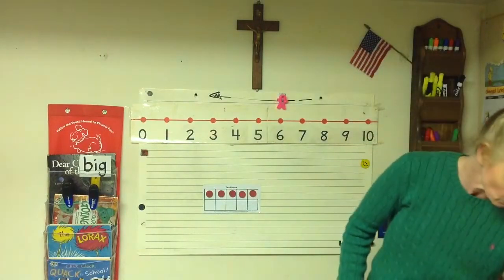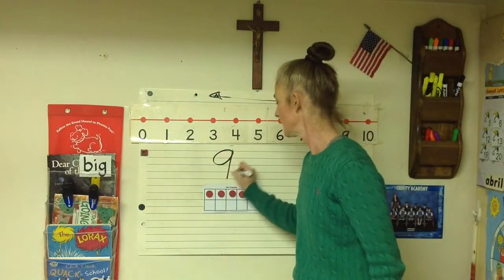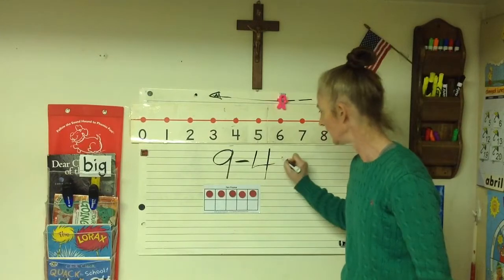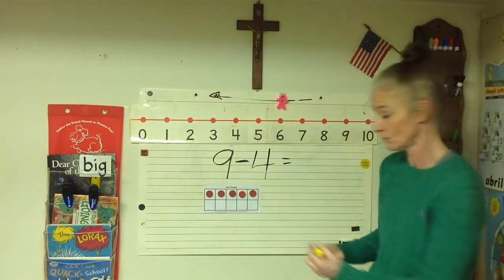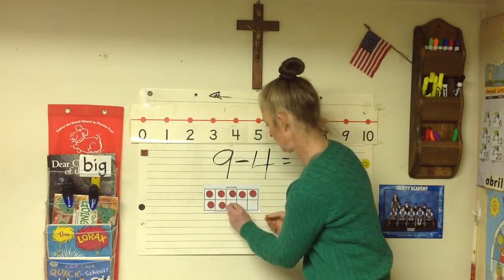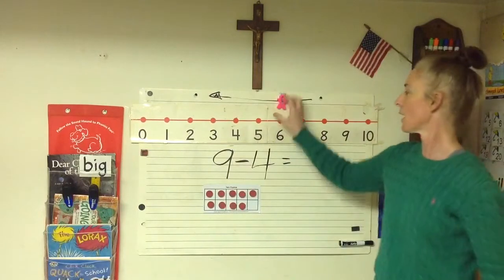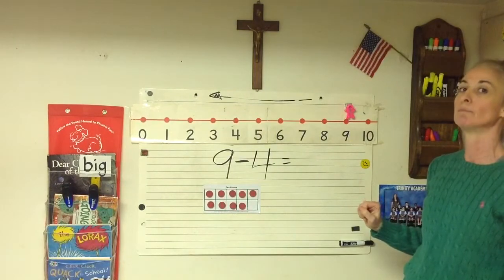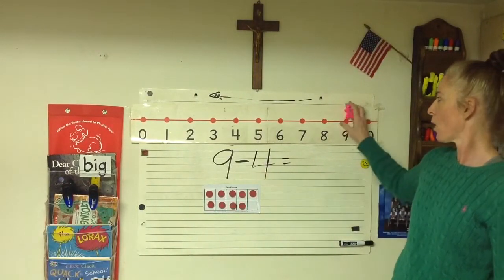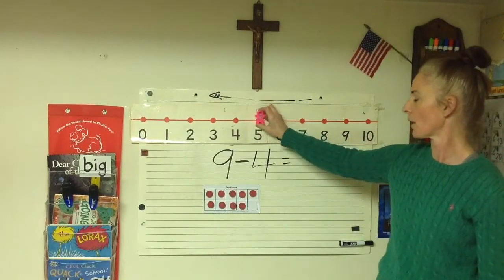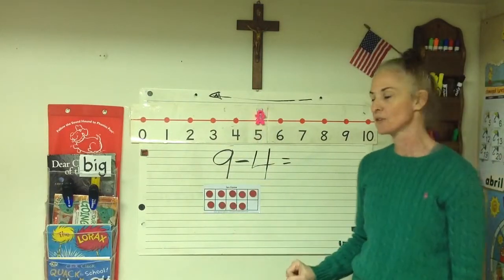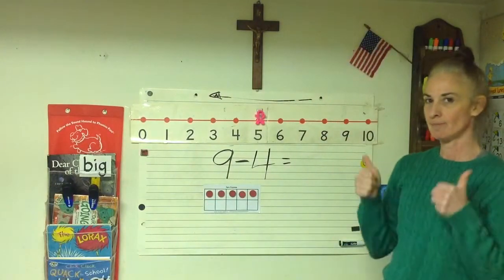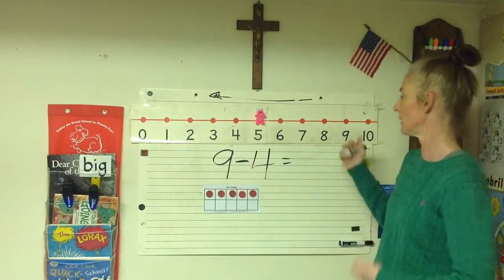Our next number sentence will be nine take away four equals. I need to put nine in my ten frame and start on nine on the number line. We're going to subtract, go back four: one, two, three, four. We landed on five. Let's see if five is our difference when I take four out of the ten frame. Yes — nine minus four is five.